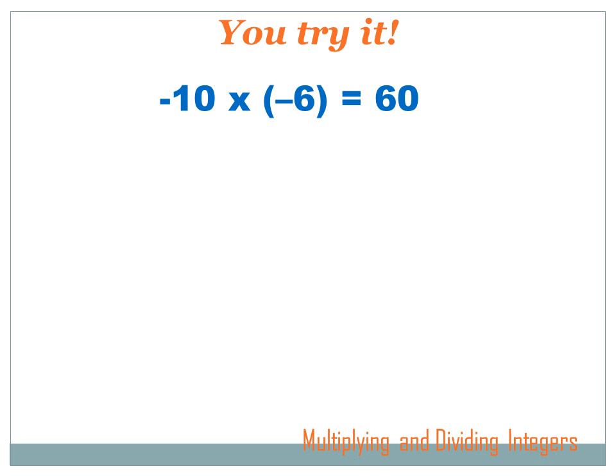Well in this one, both of the numbers we're working with are negative. So if I've got two negative numbers, or both the signs are the same, then my answer is going to be positive. -10 times -6 equals 60.